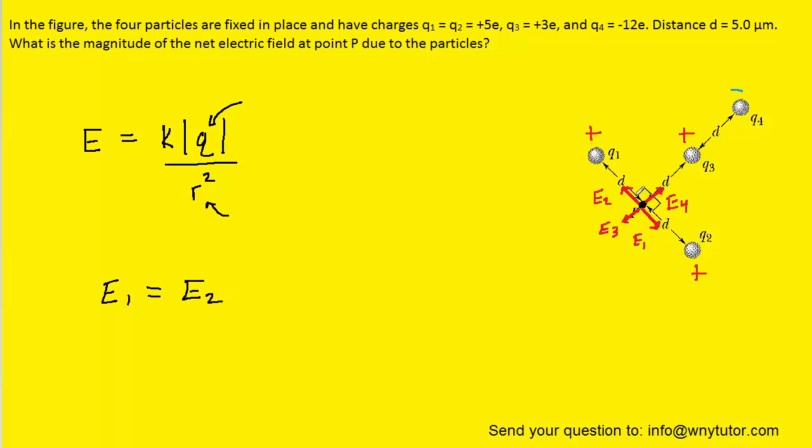Now, if we look at the drawing, we can see that their directions are completely opposite to one another. We have E1 pointing sort of down and to the right, and then we have E2 pointing up and to the left. Because the directions exactly oppose one another, and because the magnitudes are equal, that means that these two vectors are going to cancel each other out. We don't even have to consider them when determining the overall electric field. So we might want to redraw this picture and just take away E2 and E1, because once again, they're going to cancel each other out.